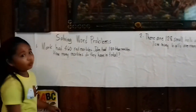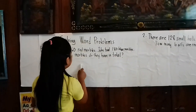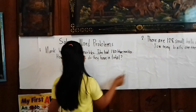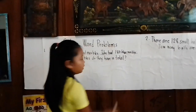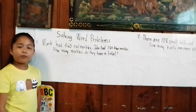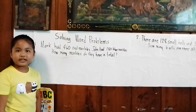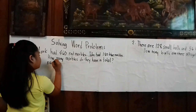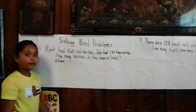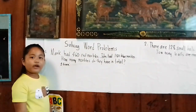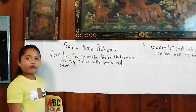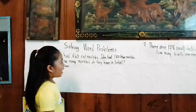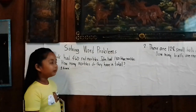Number one: Mark had 460 red marbles. Step one is 'Given.' What is the given in the problem? The given in the problem is: Mark had 460 red marbles and John had 180 blue marbles.